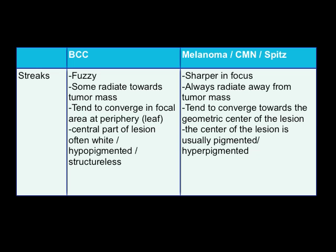In contrast, a true streak seen in a melanocytic tumor tends to be sharper and in focus. It always radiates away from the tumor mass towards uninvolved skin, tends to converge towards the geometric center of the lesion, and the center of the lesion is normally pigmented or hyperpigmented and has a blue-white veil.